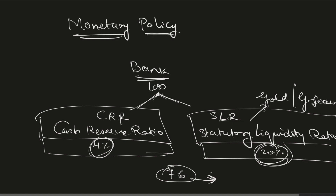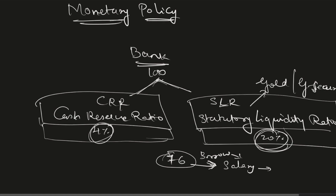With this 76 rupees, banks can lend money and make business. Someone borrows that money, does business, pays salaries — the salary earner puts money back into the bank, spends some, and whoever deposits further enables another round of lending. This chain continues, and that's how money supply grows in the market. But when money supply goes excess, inflation goes high.